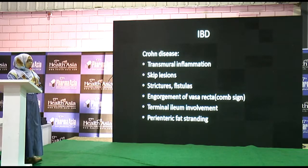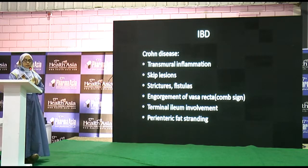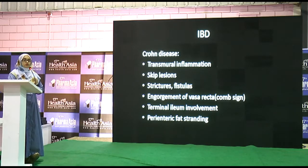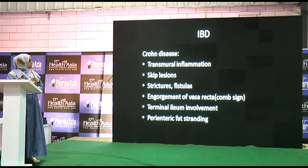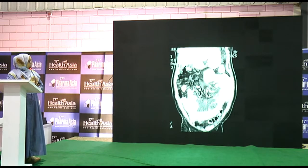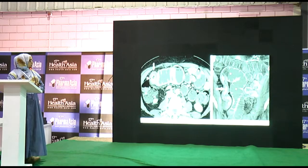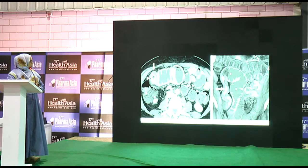For IBD, MRI is the modality of choice for ulcerative colitis and Crohn's disease, but when a patient presents in the ER with severe acute abdominal pain and differentials are not narrowed down, CT is used. In acute Crohn's disease on CT you see skip lesions, transmural inflammation, and engorgement of the vasa recta with terminal ileum involvement. One case showed thickened terminal ileum with engorged vessels and ascites. A chronic Crohn's disease case showed stricture narrowing with a dilated proximal segment.